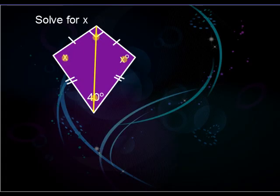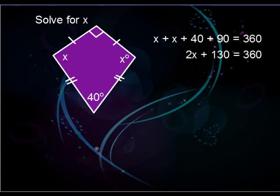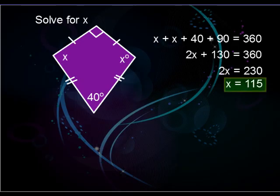It's important that when doing kite angle problems, you assign a value to every single angle. Remember, with kites there's always one pair of opposite angles that are congruent. The angles of any quadrilateral add up to 360 degrees, so write a statement totaling all four angles and set it equal to 360. Collect like terms — 2x + 130 — then subtract 130 and divide by 2.